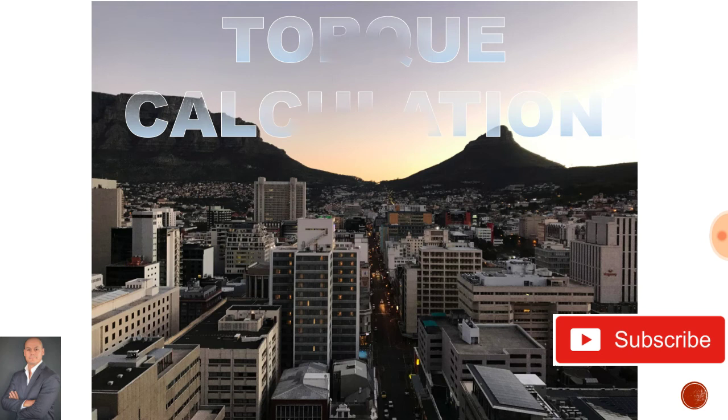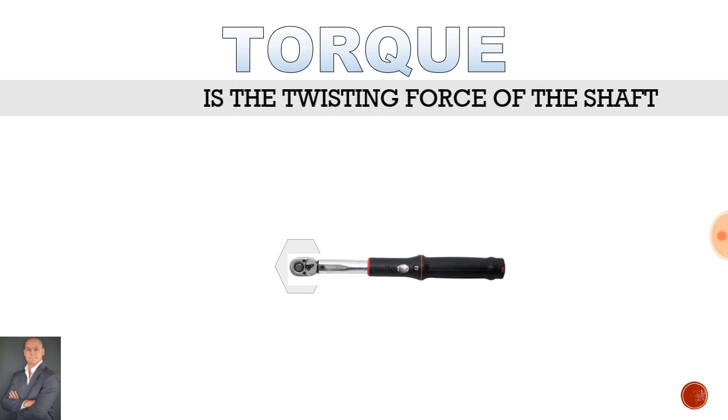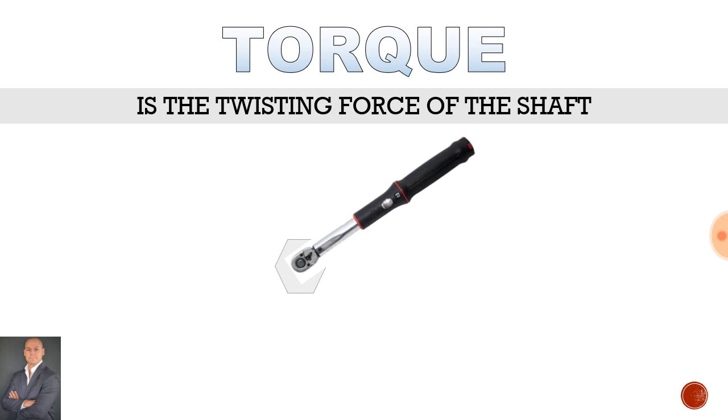Now to define torque, it is the twisting force of the shaft and this twisting force is about angular motion.